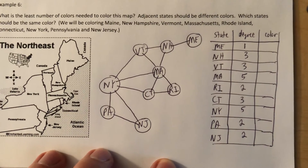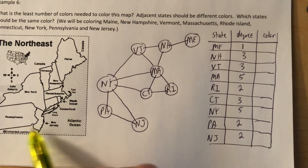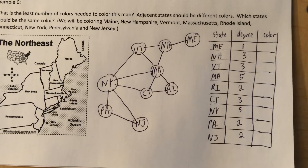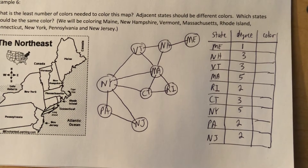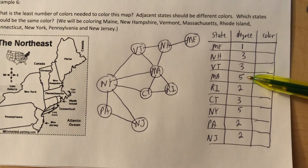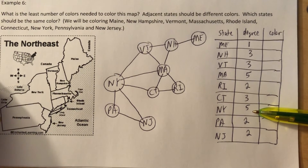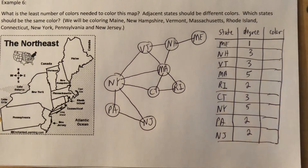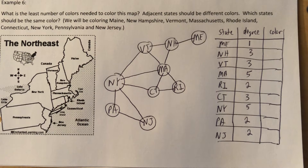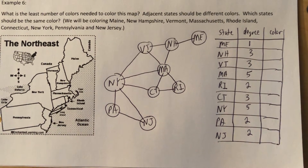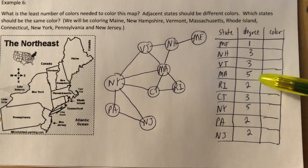Let's begin the process. Let's start with the highest degree. The highest degree is Massachusetts and New York — both are five. Which one do you pick? I don't care, pick whichever one you want. Start wherever you want — alphabetical order, whichever state you've been to. There is no wrong way to start this as long as you start with a five.